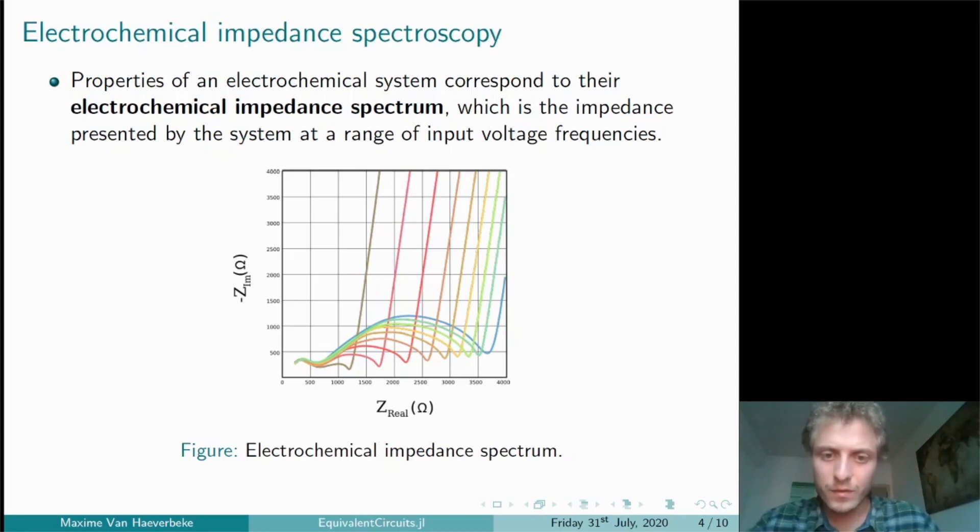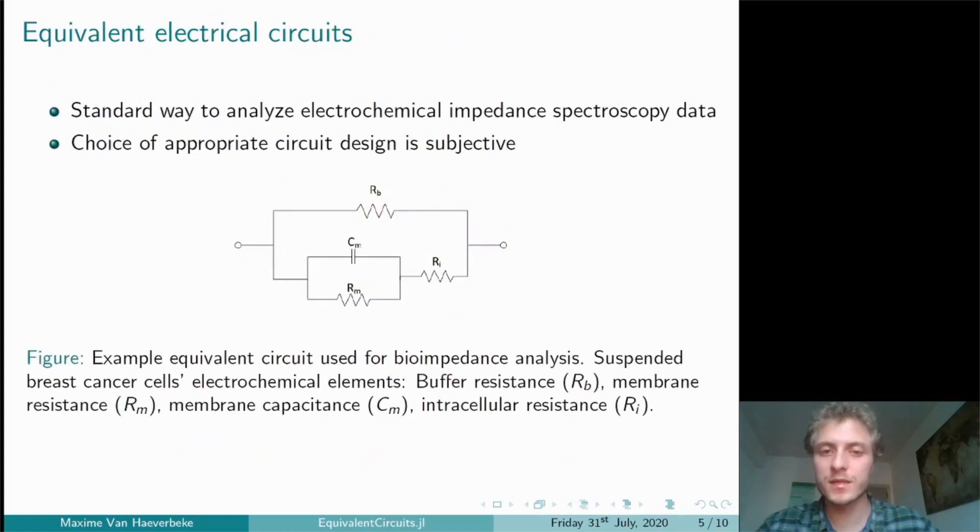In this figure, you can see an example of electrochemical impedance spectra for a biological system over a range of different frequencies and input voltages. This data is typically analyzed by fitting the parameters of an appropriate equivalent electrical circuit.